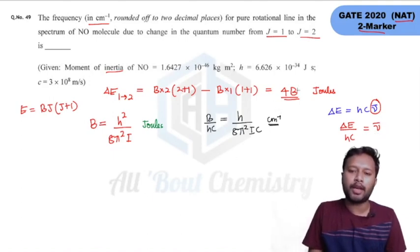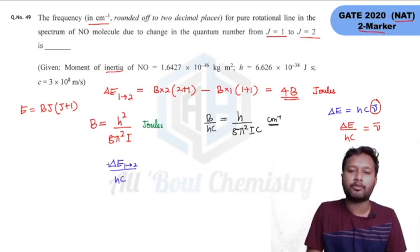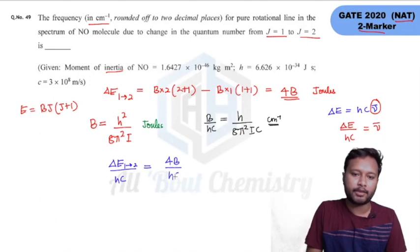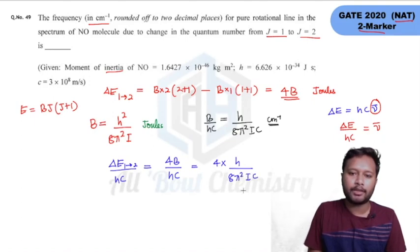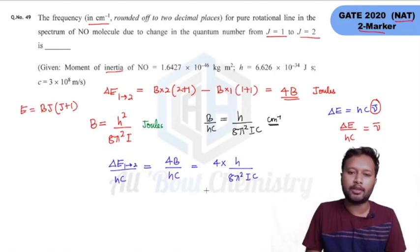So the frequency from J=1 to J=2 in wavenumber units is ΔE/HC = 4B̃, which equals 4 × H/(8π²IC). Substituting all the given values — moment of inertia in meters, H, and speed of light in meters — you carry out the calculation and at the end you will be getting 681.36 m⁻¹.